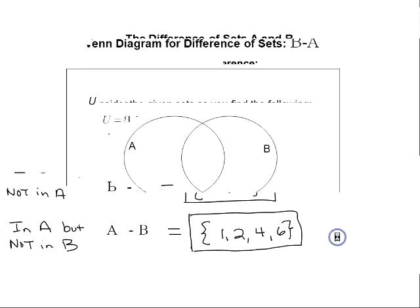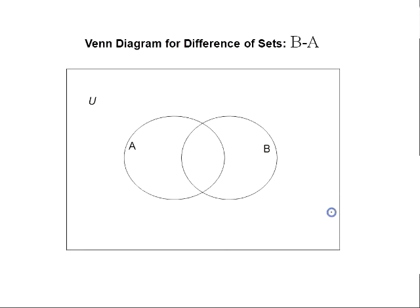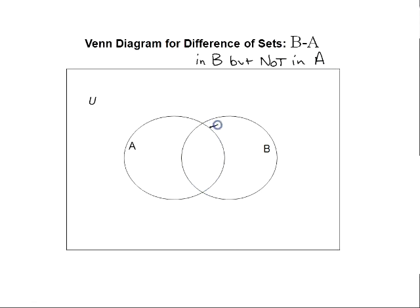Let's look at the Venn diagram for the difference of sets. For B minus A, everything that's in B but not in A: the region in set B but not in set A is this region right here on the Venn diagram.